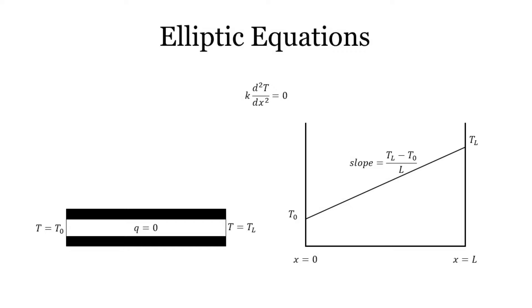An important feature of elliptic equations is that the change in the interior of the solution changes the solution everywhere. Because of this, the solution is smooth. It has no jumps or discontinuities.